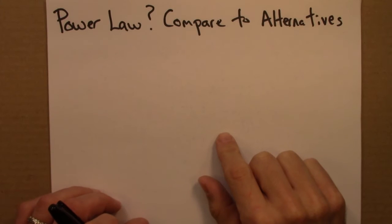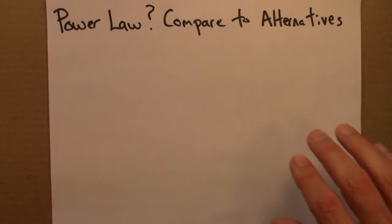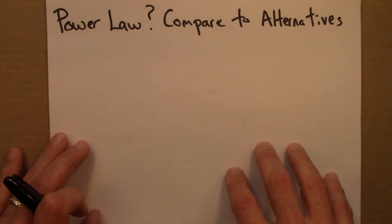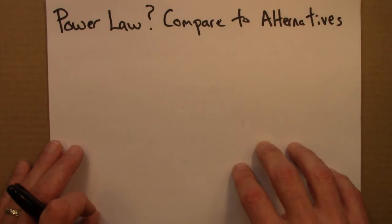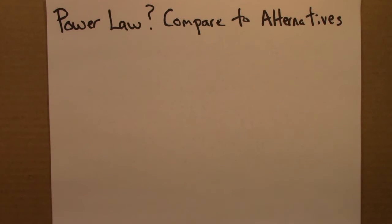So if you're fitting something to a power law, it's important to consider other possible distributions you might fit to as well. Maybe the data is well described by a power law, but even better described by a lognormal. So in this video, I want to describe two approaches for thinking about how you might compare fits to different distributions.